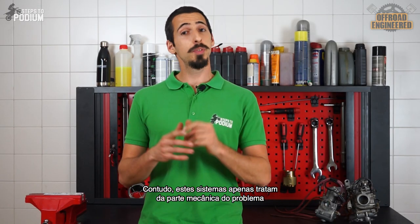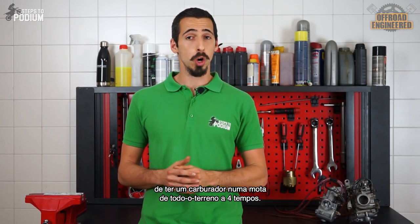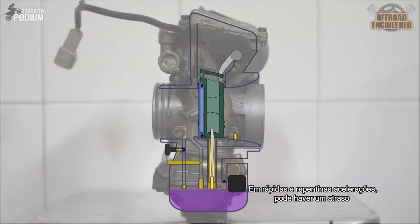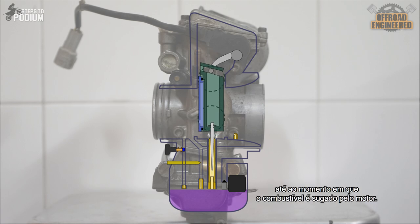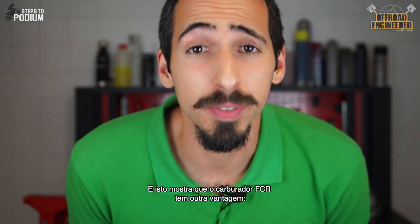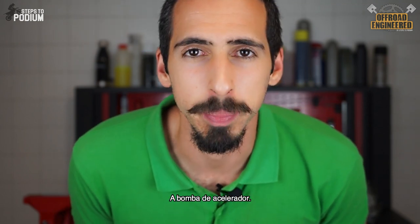However, these features only address the mechanical part of the problem of having a carb in four-stroke dirt bikes. On sudden and quick accelerations there can be a lag from the moment you open the throttle to the moment the fuel is being sucked by the engine. The mixture will momentarily become too lean and can make the engine stall in typical four-stroke fashion. This is where the flat CR carb brings another trick to the table: the accelerator pump.